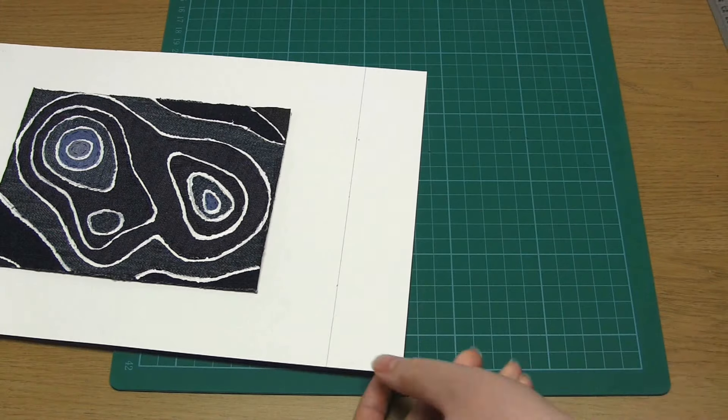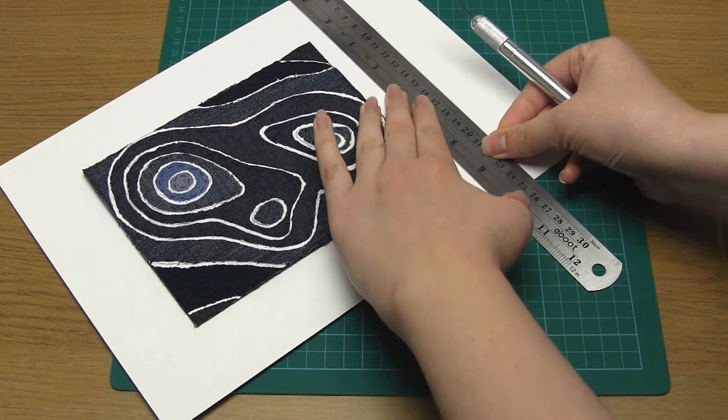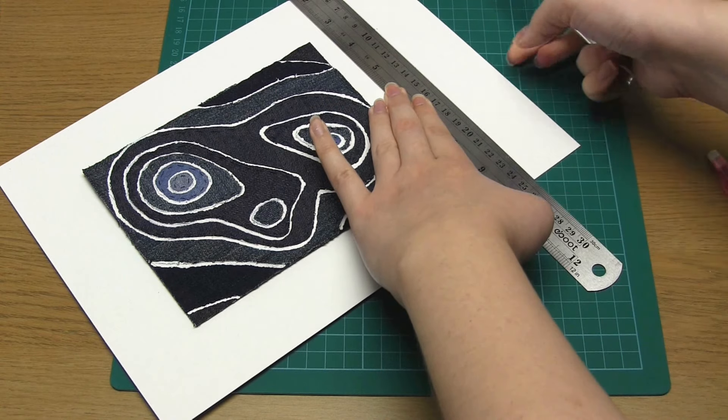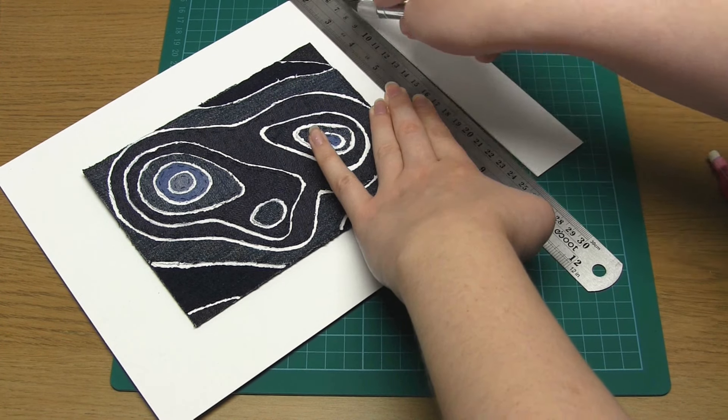Draw lines to join up these points and then cut along these lines. It's best to use an exacto knife, a ruler, and a cutting mat to do this.